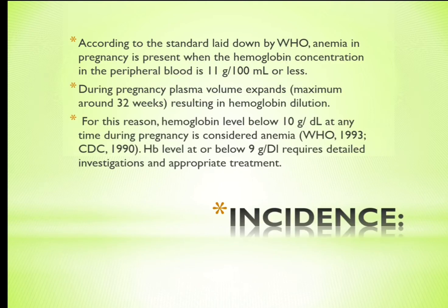According to the standard laid down by the World Health Organization, anemia in pregnancy is present when the hemoglobin concentration in the peripheral blood is 11 grams per 100 ml or less. During pregnancy, plasma volume expands maximally around 32 weeks, resulting in hemoglobin dilution. For this reason, hemoglobin level below 10 grams per deciliter at any time during pregnancy is considered anemia.